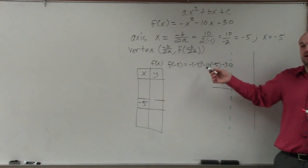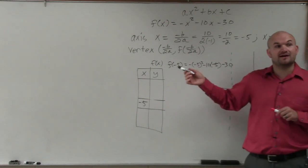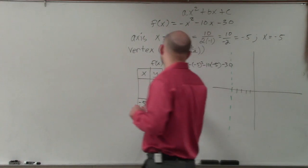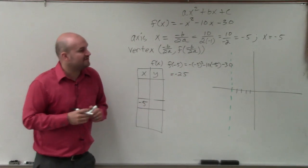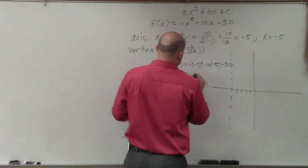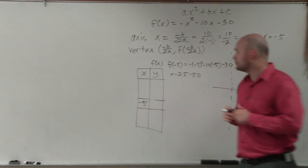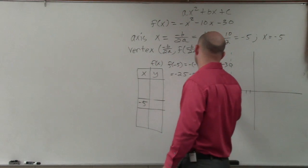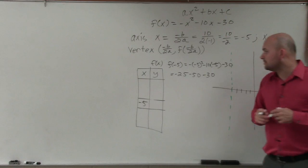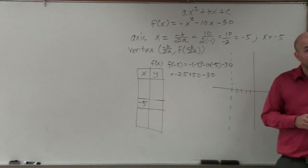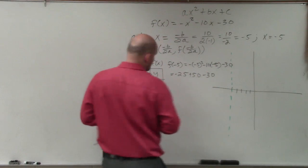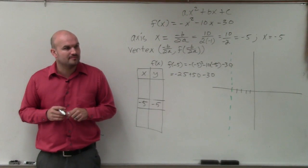Negative 5 squared is negative 5 times negative 5, which is 25. 25 times negative 1 is going to be negative 25. Negative 10 times negative 5 is going to be positive 50. And then minus 30. So therefore, that gives me negative 5.